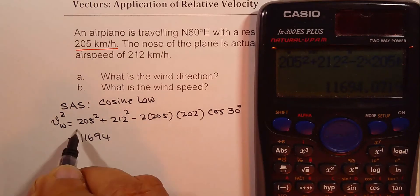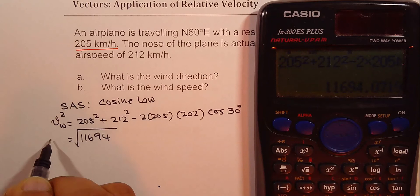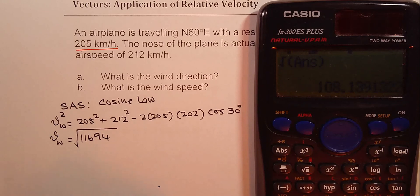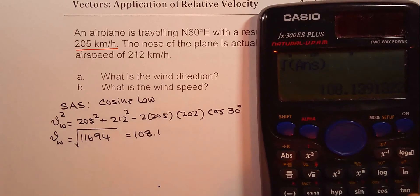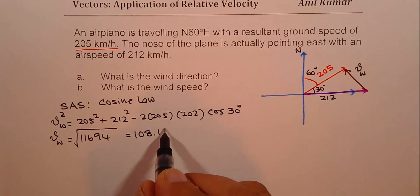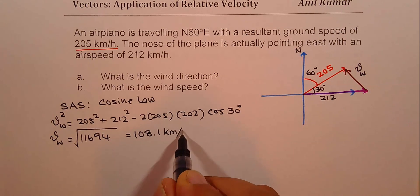So we will do the square root of this to get wind velocity. Let us find square root of our answer, which is 108.13. So we get 108.1. So the units are kilometers per hour. Is that clear? So we got the wind velocity.